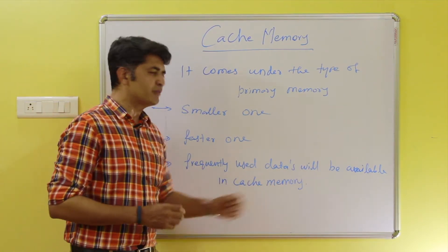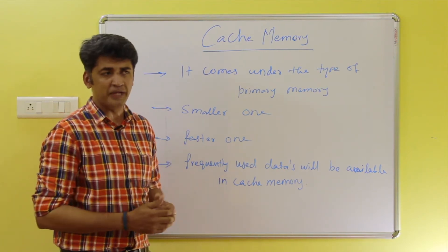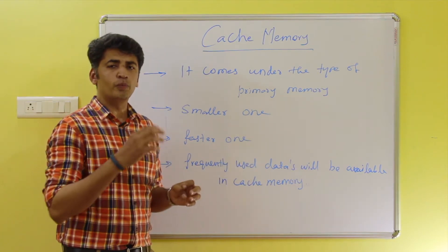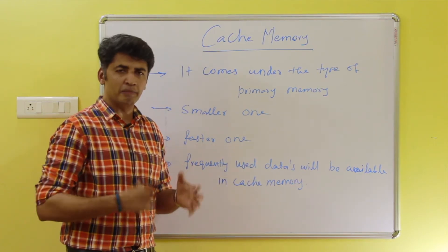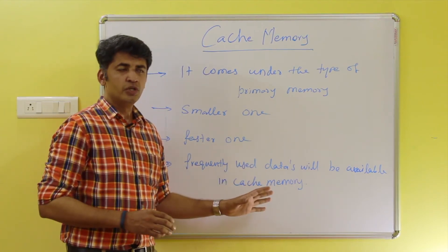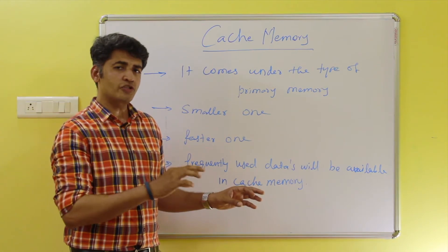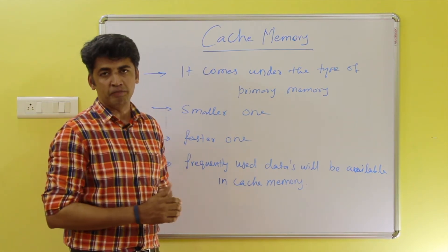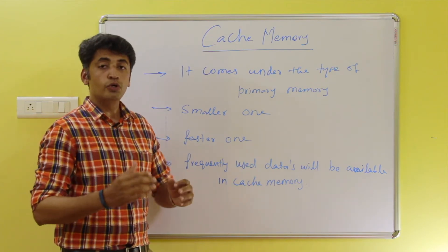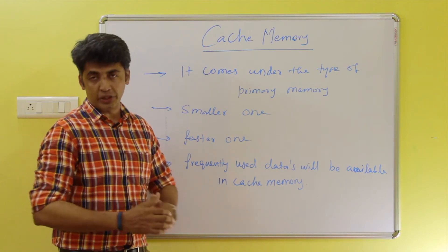One of the major advantages is that frequently used data will be available in the cache memory. If the particular processor needs one particular data multiple times, that data can be stored in the cache memory. So instead of accessing the same data from the main memory, the processor can access the data from the cache memory. The data accessing time will be reduced, the processor performance will be increased, and execution time will be reduced.